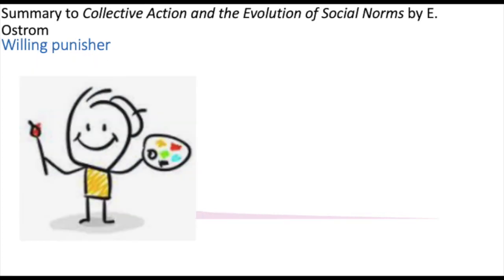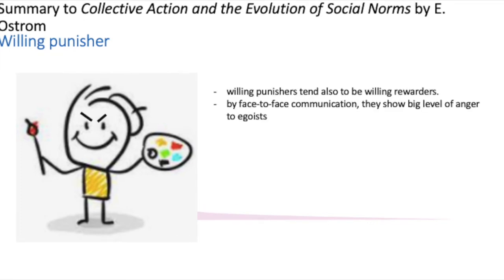The last type is the willing punisher. Willing punishers may also become willing rewarders if their relationships allow them to reward those who have contributed more than the minimal level. Some conditional cooperators may also be willing punishers. Together, conditional cooperators and willing punishers create a more robust opening for collective action and a mechanism for helping it grow. Through face-to-face communication, willing punishers also show a high level of anger toward free-riders.